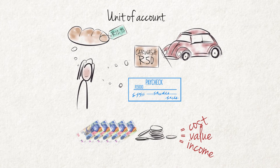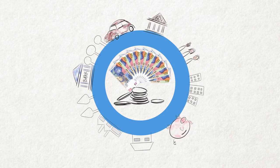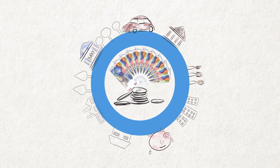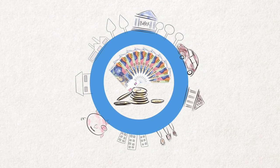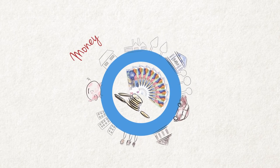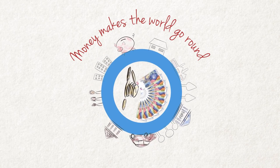In expressing cost, value, and income in one common measurement, it is also possible to make comparisons to determine what is expensive and what is cheap. Conclusion: Money is therefore very important in every modern economy and oils the wheels of exchange. It is not without reason that the expression is: money makes the world go round.